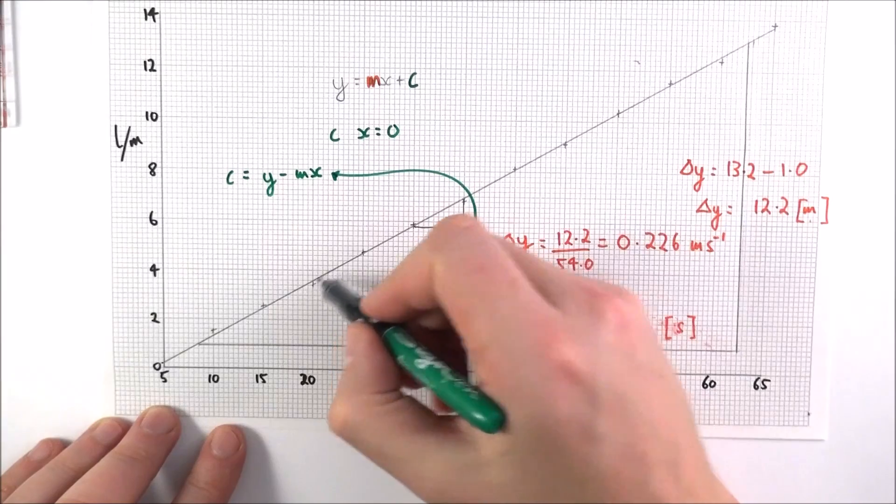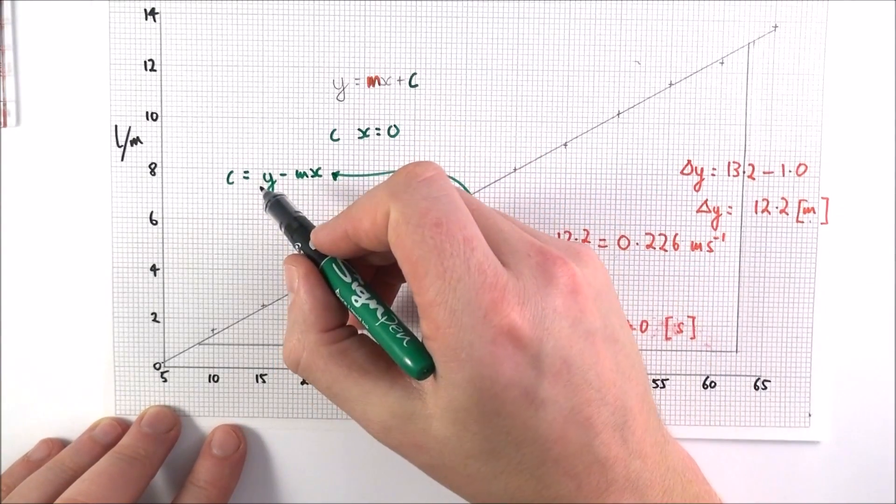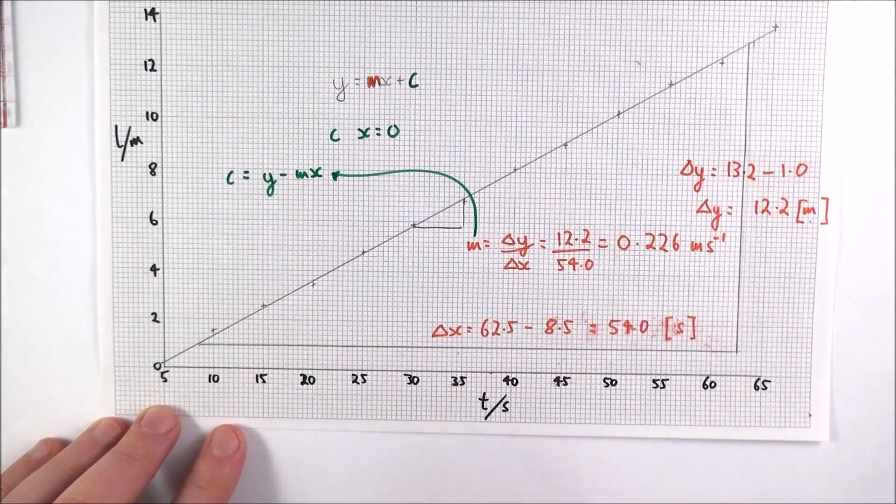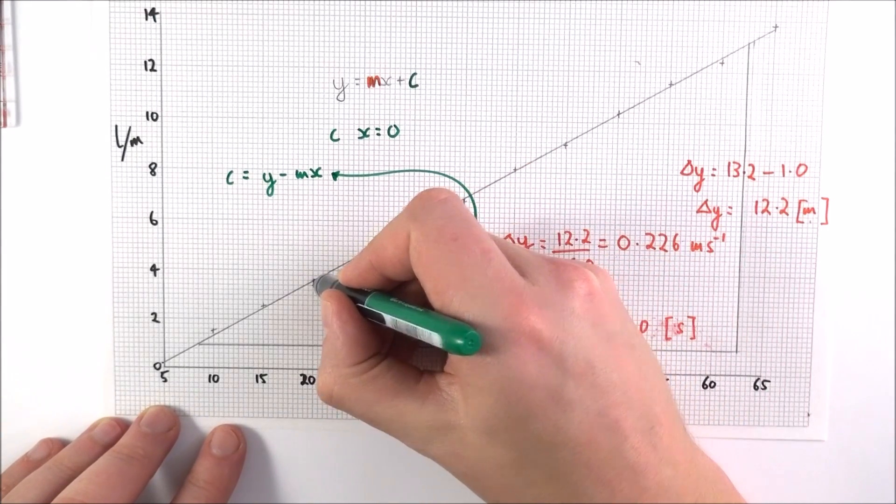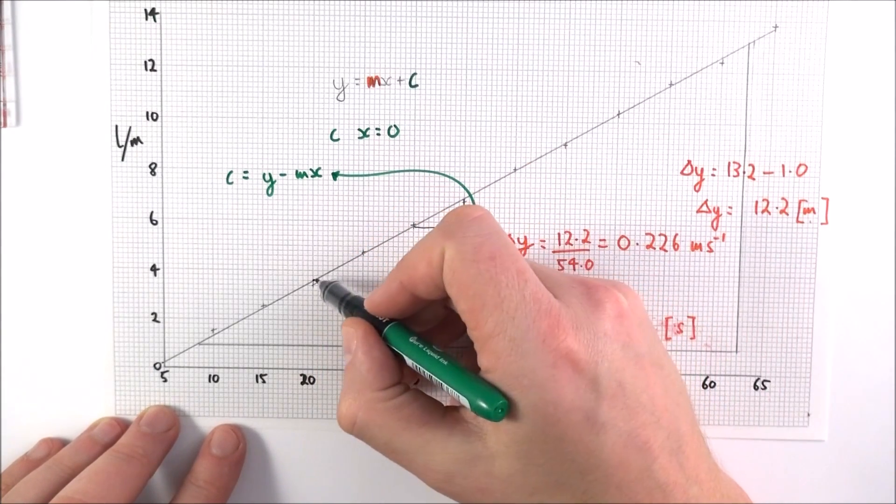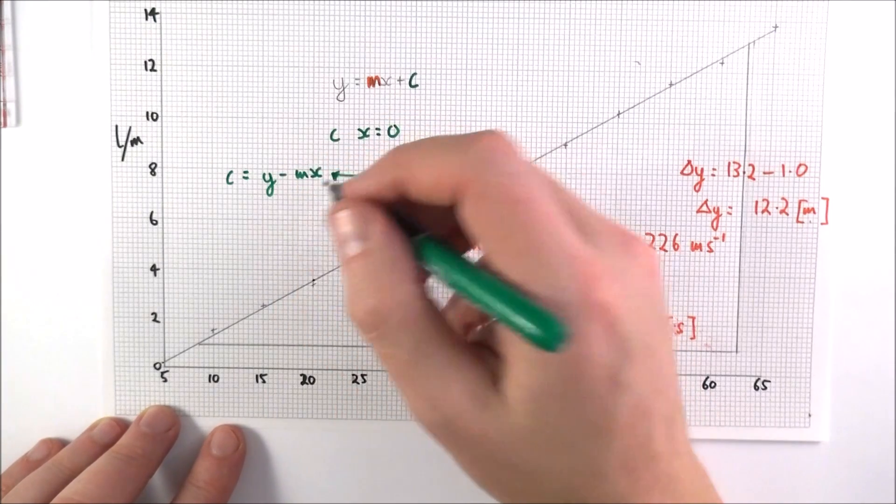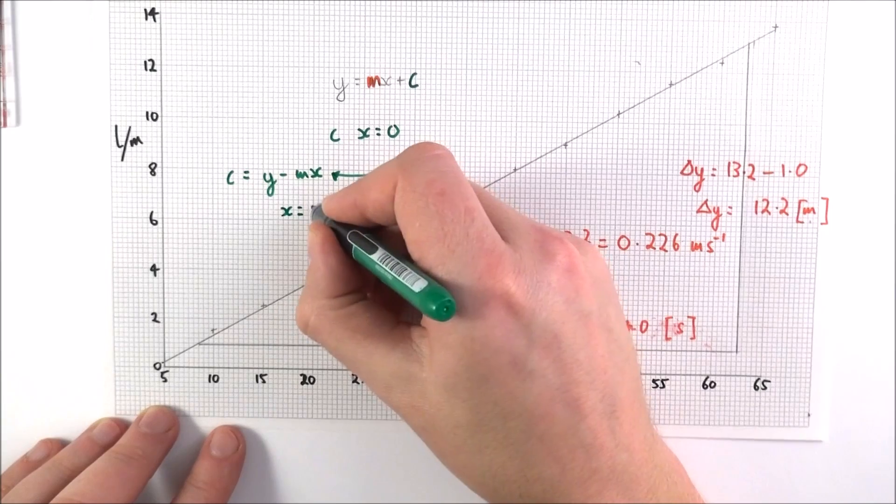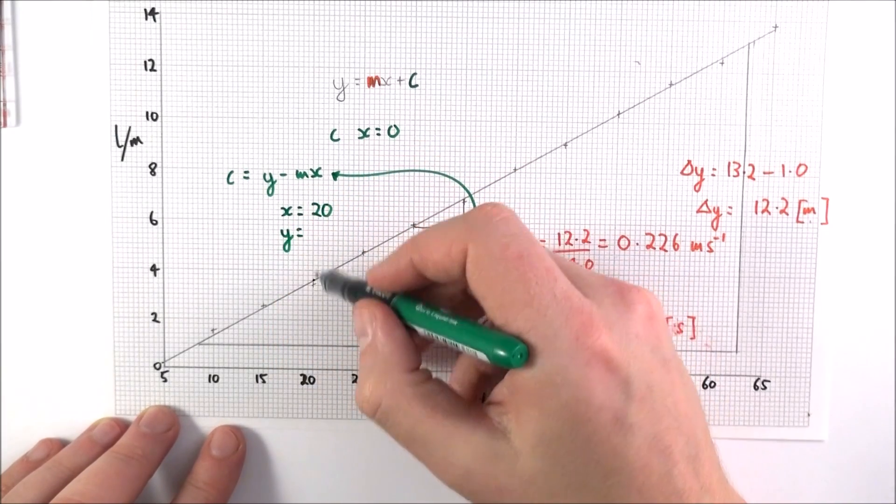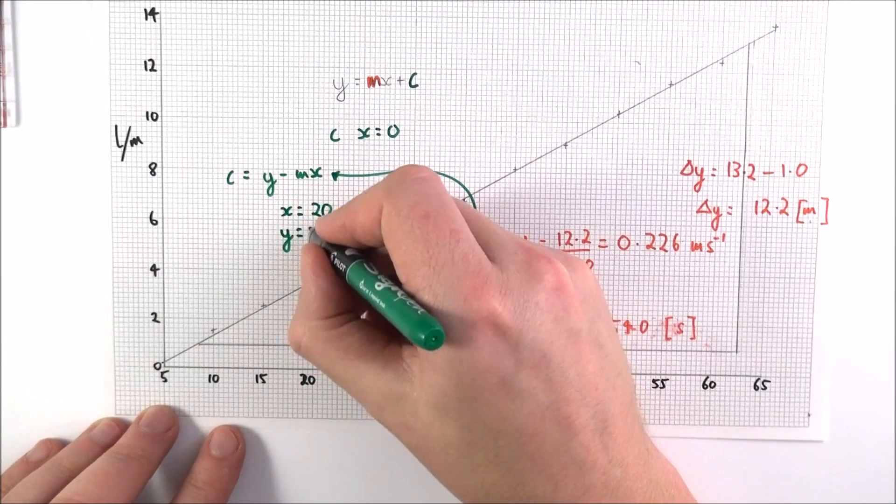And then we can take another point which is on the line for the values of y and x. So let's take maybe this point down here. Now again, I'm taking the point on the line, not the actual plotted value. So the point on the line has an x value of 20 and the y value is equal to 3.6.